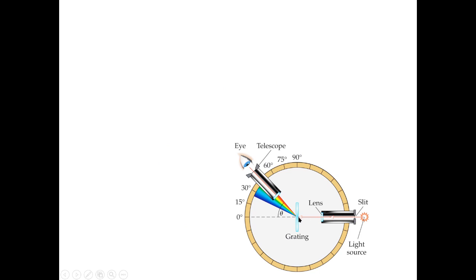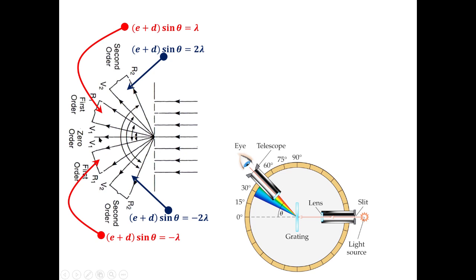Light is incident at the grating and various principal maxima are viewed with increasing diffraction angle. At θ = 0 we get the zeroth order. If the incident light contains a number of wavelengths, or is white light, then all wavelengths merge to give the zeroth order. The first order will be according to various lambdas, and the second order similarly. The first order is given by (e + d) sin θ = ±λ and the second order by (e + d) sin θ = 2λ.